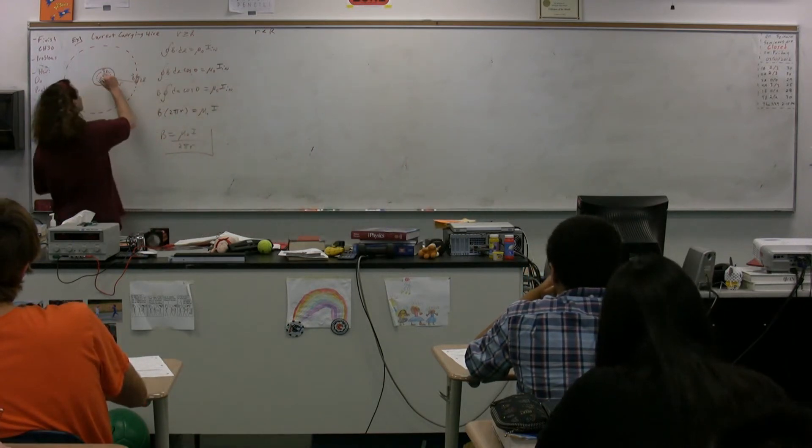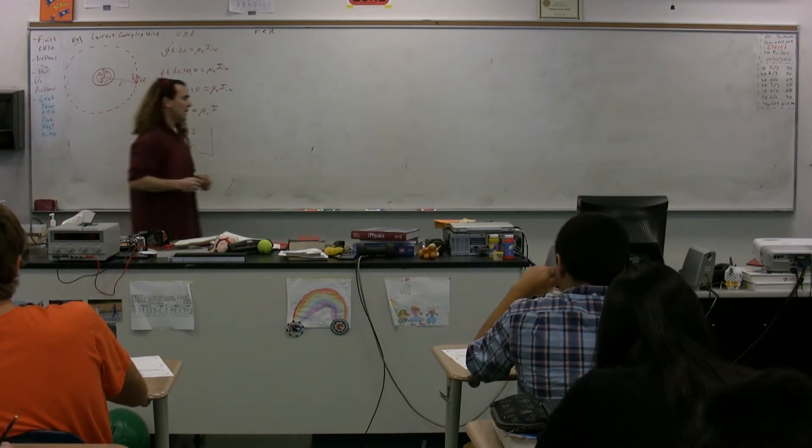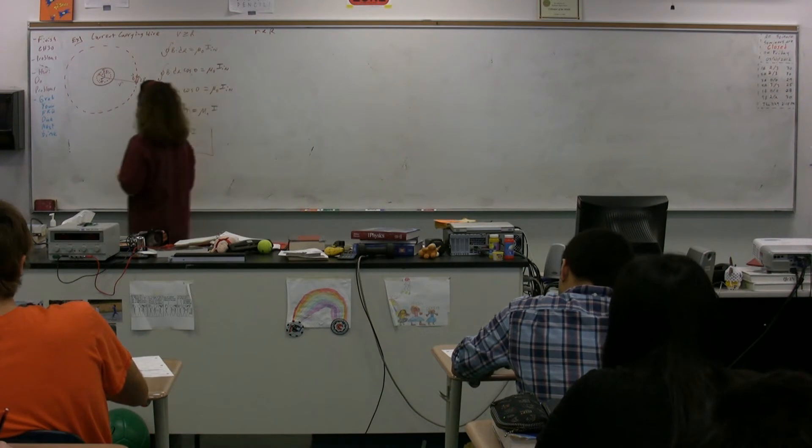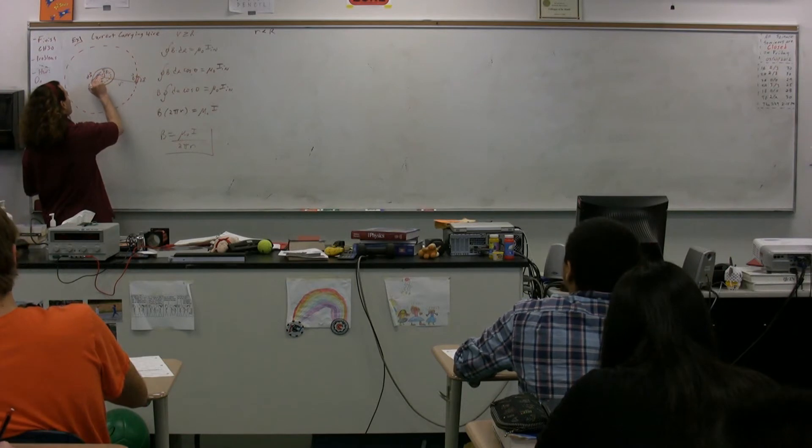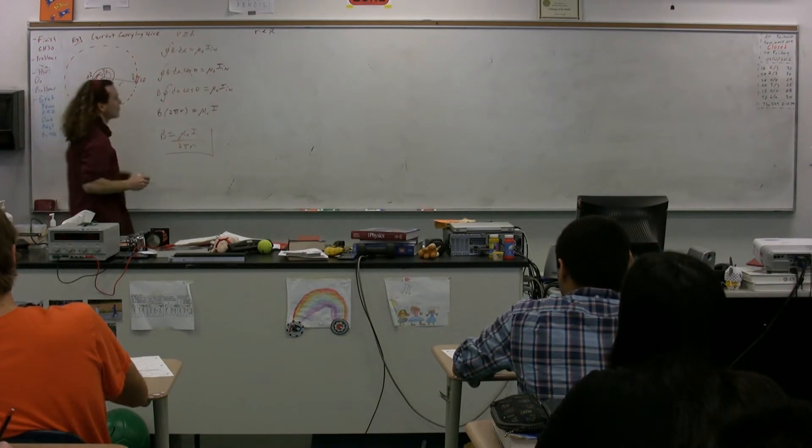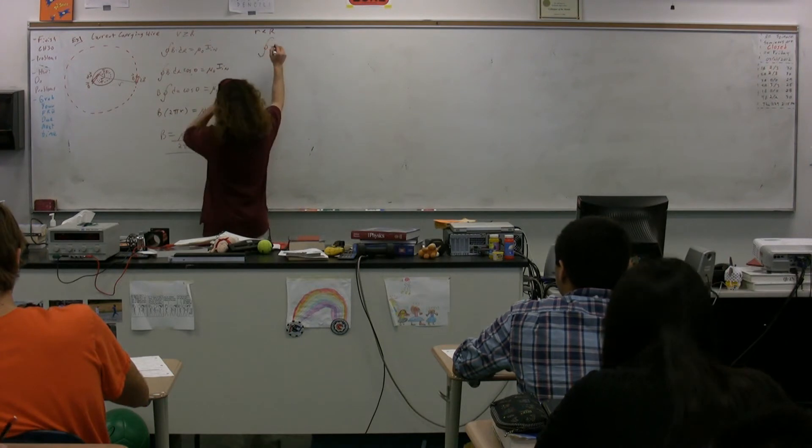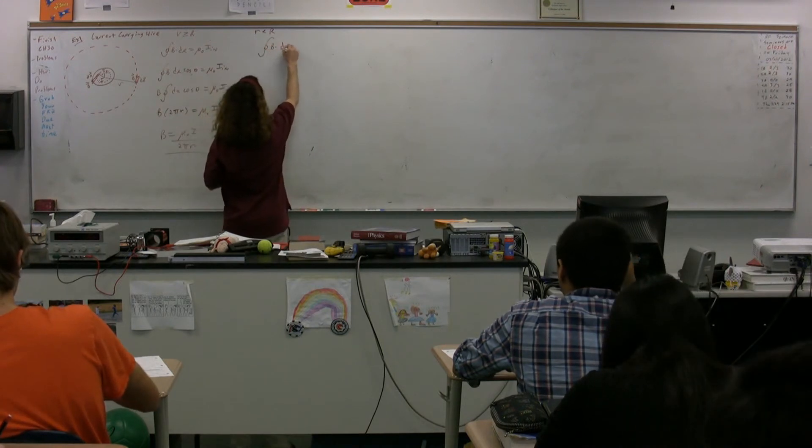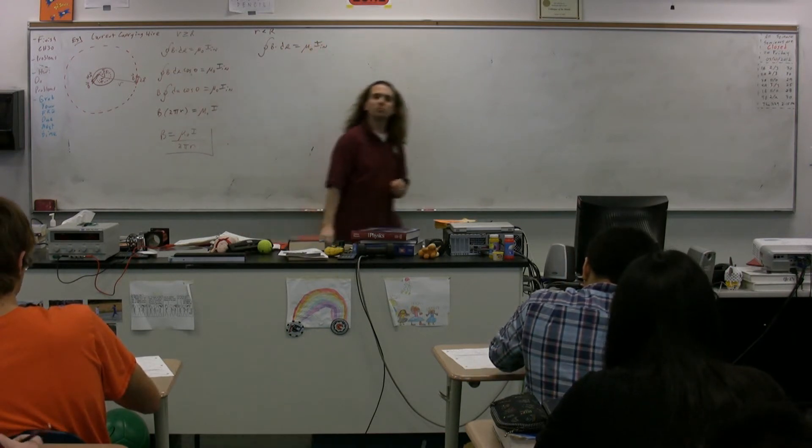Our amperean loop is going to have a radius less than big R. So our amperean loop is now for part 2 little r. It actually is going to look very similar. We're going to have ds is going to be in this direction, and b is also going to be in that same direction. We just went through both of those things. So we have Ampere's Law. The closed loop integral of b dot ds is equal to mu naught times the current inside the amperean loop.